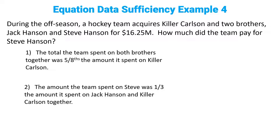During the off-season, a hockey team acquires Killer Carlson and two brothers, Jack Hansen and Steve Hansen, for 16.25 million. How much did the team pay for Steve Hansen? Always pick out what you've been asked for and write it down — we are trying to find the value of S. Step two: pick out any equations we are given in the question. In this case, we are told that K plus J plus S equals 16.25.